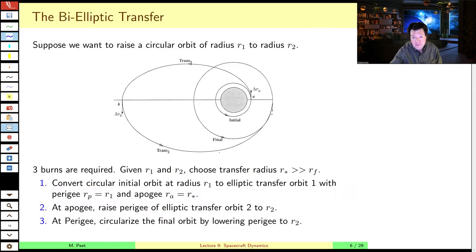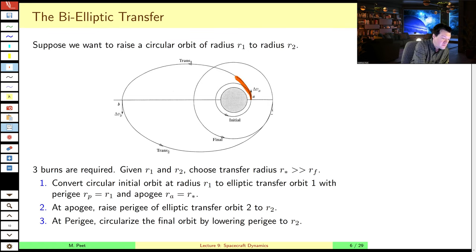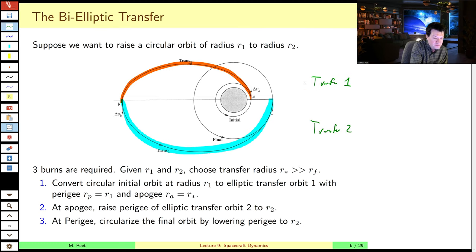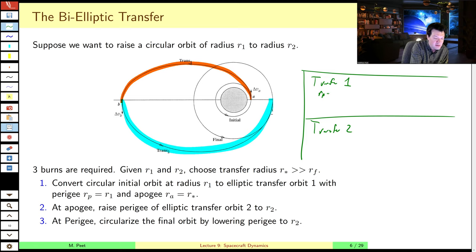So let's quantify these things. We've got two transfer orbits — transfer one and transfer two — which are two ellipses. For transfer one, our radius of periaps is our initial orbit R1, and our apoaps is that target radius R-star, which we want to be as large as possible. The larger the target radius, the longer this maneuver is going to take.